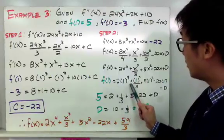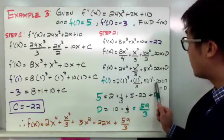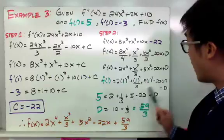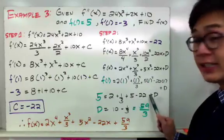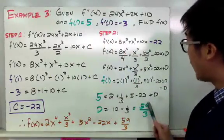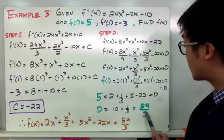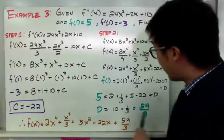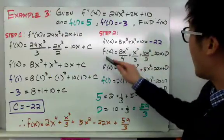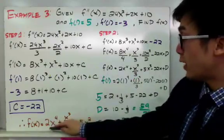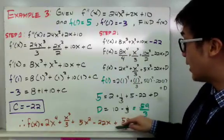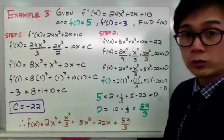So we have 2 times 1 to the fourth plus 1 cubed all over 3 plus 5 times 1 squared minus 22 times 1, which gives us 2 plus 1 third plus 5 minus 22 plus d equal to 5, because f of 1 is equal to 5. Solving the equation, d is equal to 59 over 3. By finding the value of this last constant, 59 over 3, we can find f of x. Therefore, f of x equals 2x to the fourth plus x cubed all over 3 plus 5x squared minus 22x plus 59 over 3.